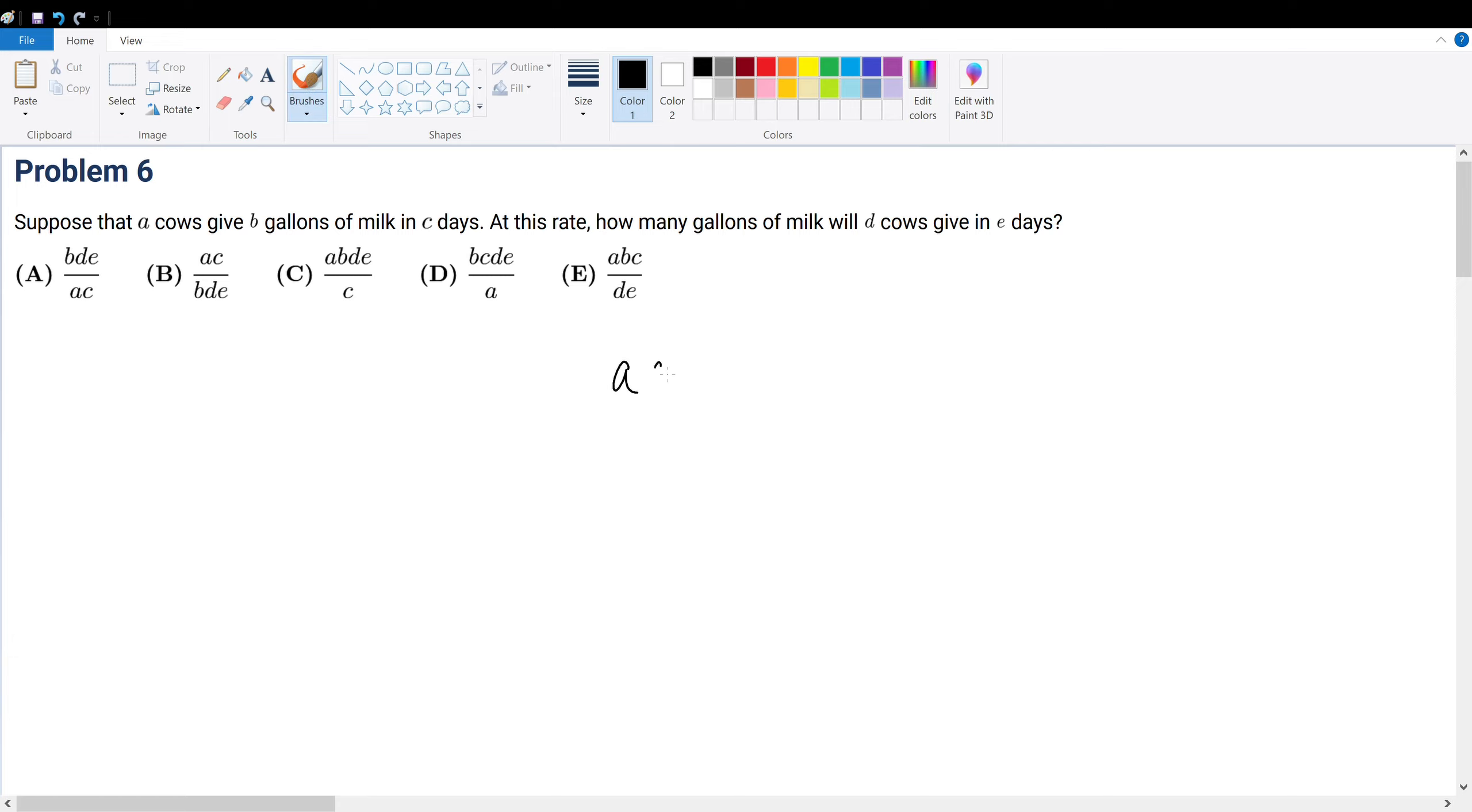Problem 6: Suppose that A cows give B gallons of milk in C days. At this rate, how many gallons of milk will D cows give in E days? We're just trying to solve for this variable.